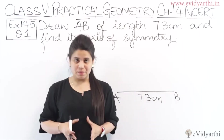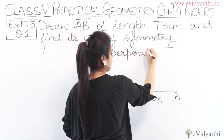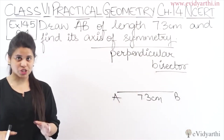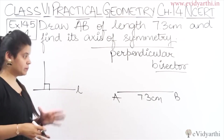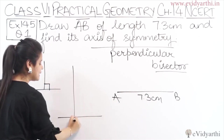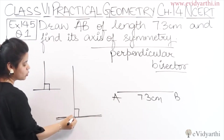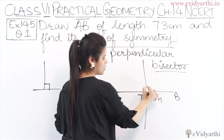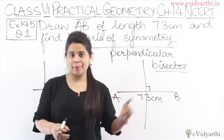You can find its axis of symmetry. In simple language, the axis of symmetry is the perpendicular bisector. Perpendicular means the line is at a 90 degree angle. When we talk about perpendicular bisector, the bisector divides the line into two equal parts at a 90 degree angle. For example, this is AB — a straight line — and this line is at 90 degrees and divides AB into two equal parts. So this is a perpendicular bisector.